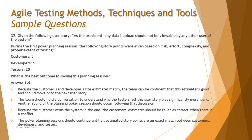Moving on to question 32 — a quick example of a planning poker session. Given the user story: as a precedent, any data I upload should not be viewable by any other user of the system. During the first planning poker session, story points were given based on risk, effort, complexity, and proper extent of testing. The customer gave 5 points, the developer gave 5 points, and the tester gave 20 points. What is the best outcome following this planning session?